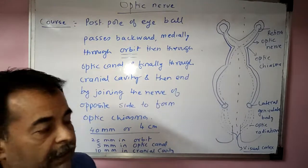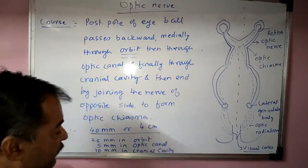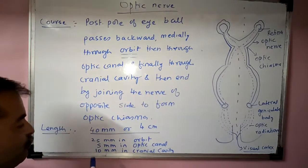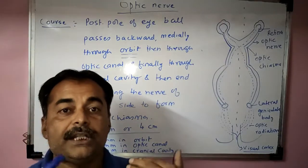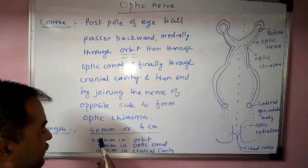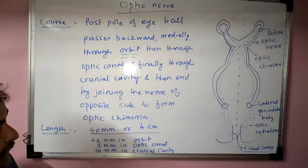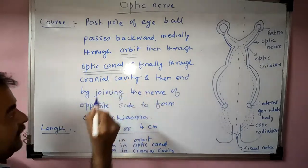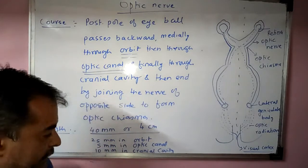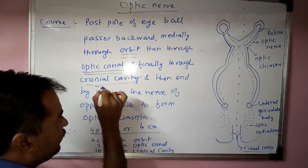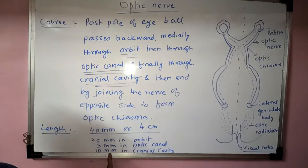The length of the optic nerve is 40 mm or 4 cm. Of this, 25 mm or 2.5 cm lies in the orbit. While 5 mm or 0.5 cm lies in the optic canal. And finally the part that lies in the cranial cavity is 10 mm or 1 cm.